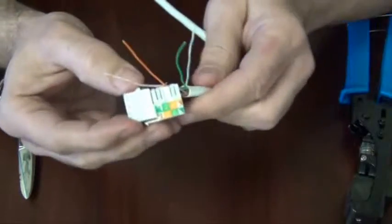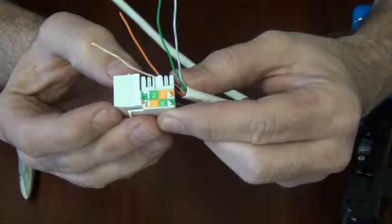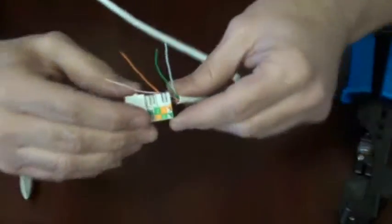Now on the other side, you'll notice you've got the two colors. I'm going to do the bottom color because that's what B is. So I'm going to put the orange and white in first.